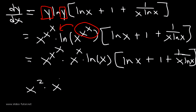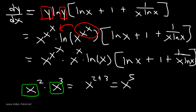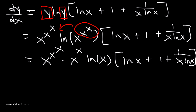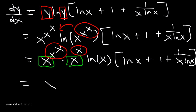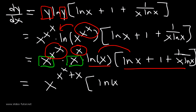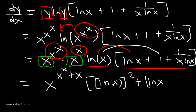Now, x^(x^x) times x^x — since we have a common base x, we add the exponents. So this equals x^(x^x + x). Then ln(x) distributes to everything on the inside: ln(x)·ln(x) is ln²(x), and ln(x)·1 is ln(x), and ln(x)·(1/ln(x)) cancels to give 1/x.